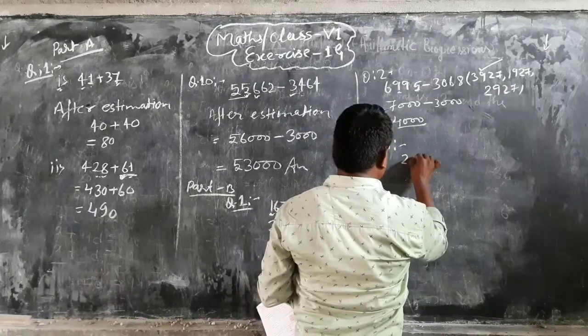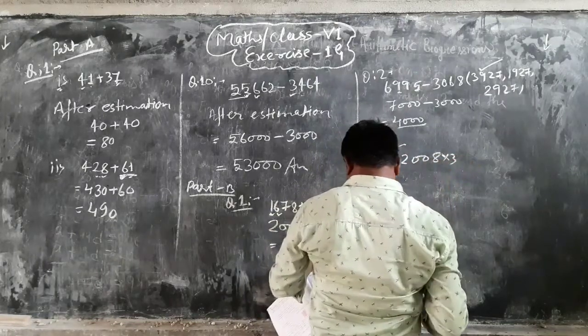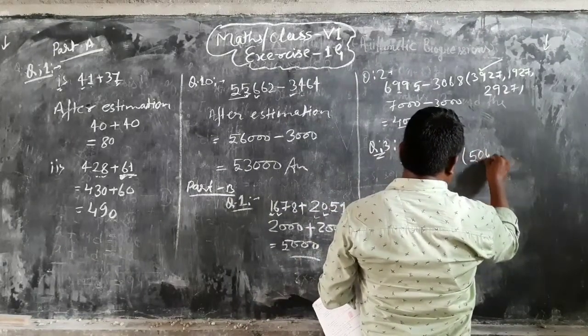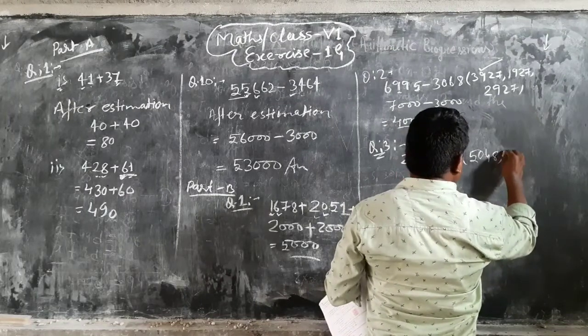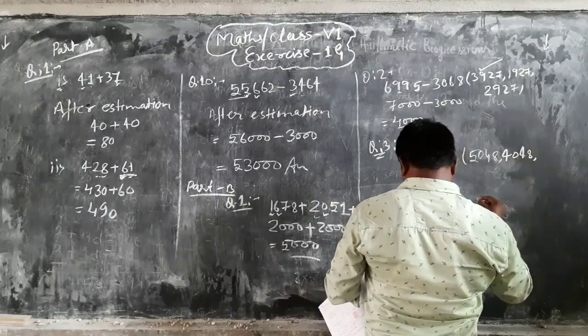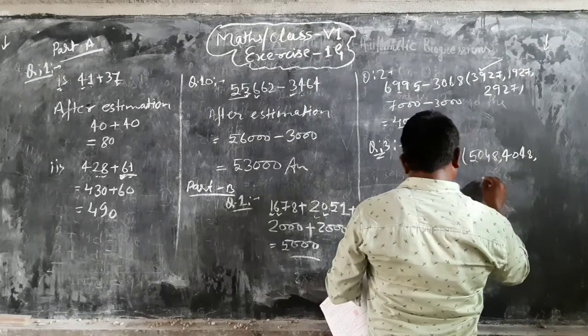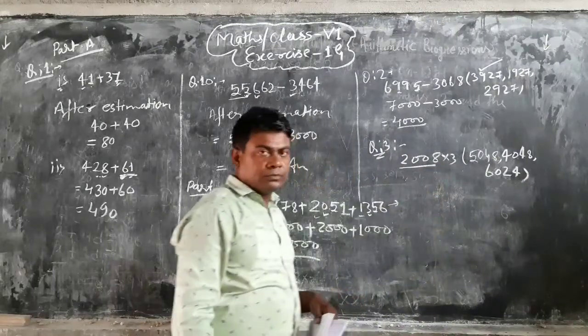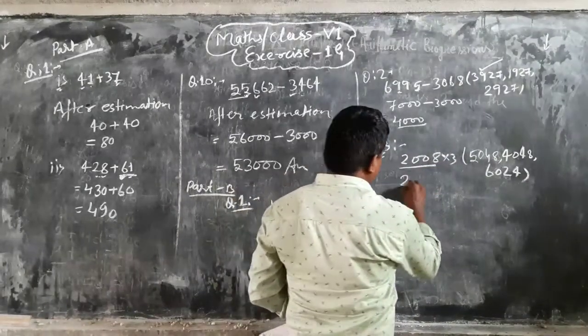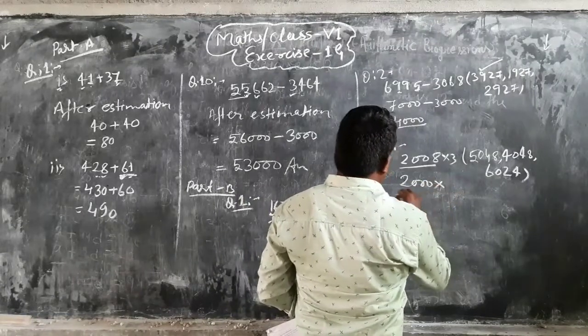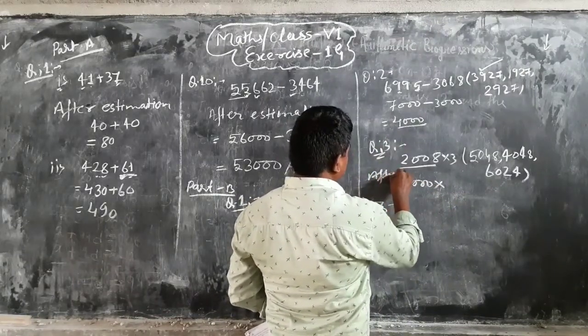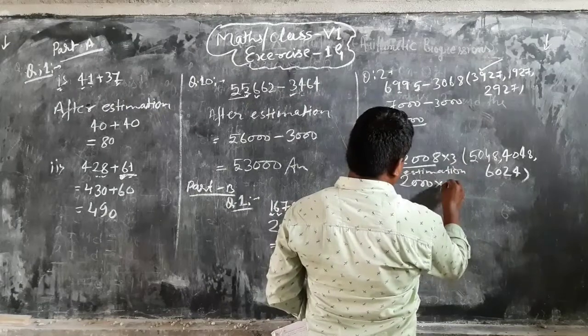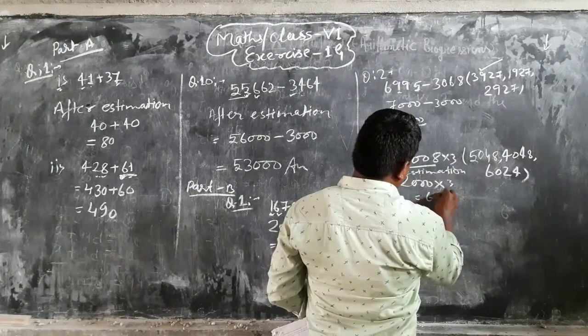Next, third one: 2008 into 3. And the options are 5,048, 4,048, and 6,024. What do we do? 2008 round up is simply 2,000. After estimation, after estimation we can see. After 3, it is 6,000.